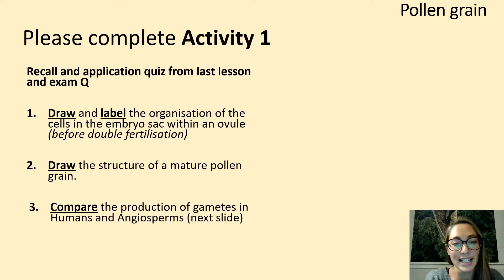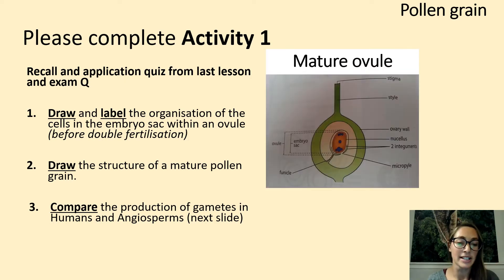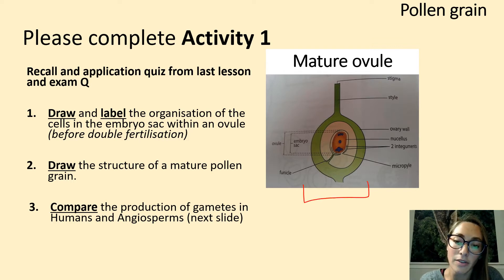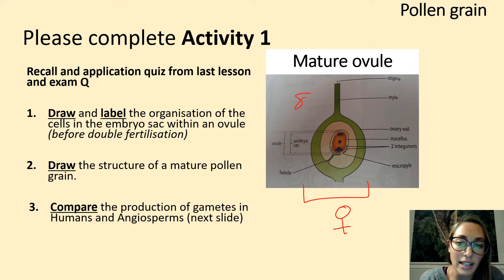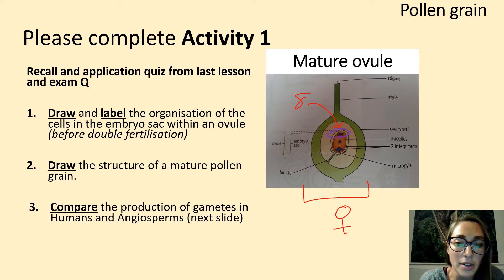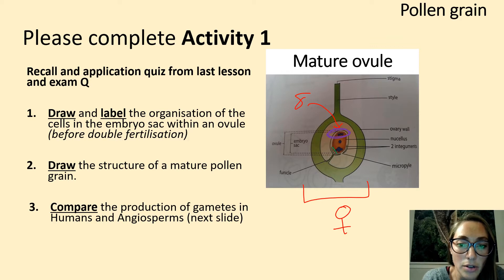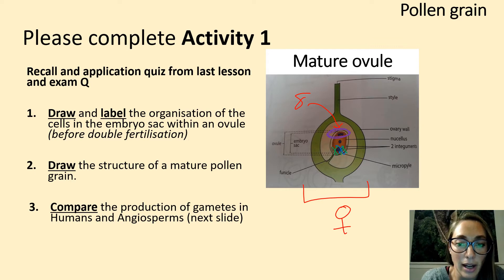Please pause the video and complete activity one. These questions are recall from last lesson. The first question: draw and label the organization of cells in an embryo sac within an ovule. Looking at the carpel — the female reproductive part of the flower — we have eight cells in the embryo sac. At the top are three antipodal cells, in the middle a diploid polar nucleus, and at the bottom two synergids either side of the oosphere, which is the female gamete.